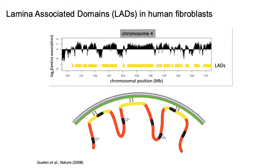From these LAD calls across the entire genome, you can basically come up with a hypothetical model of which regions of the genome are associated with the lamin. One of those possible models is shown here on the bottom, where yellow regions of the chromosome indicate where the regions associated with the nuclear lamina are. Those short black lines represent H3K27 trimethylation, which is an epigenetic mark of heterochromatin, or basically transcriptionally inactive regions of the genome. Generally speaking, K27 trimethylation sits near LADs in the genome.